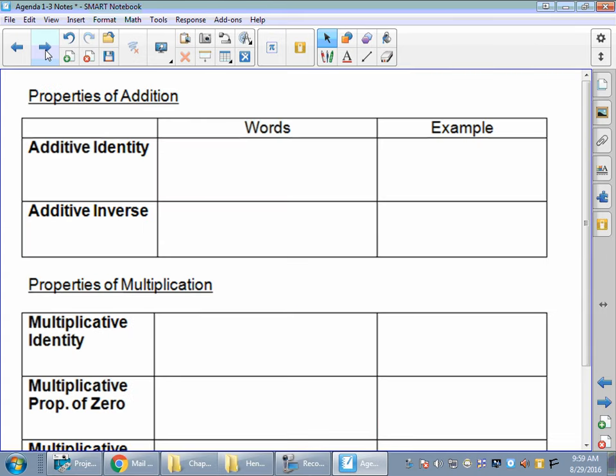Addition property and multiplication property. I told you there's a lot of properties. I'm sorry. It is what it is. These two guys are really easy, though. Additive identity says you can add 0 and you keep your identity. You've heard of identity theft, right?